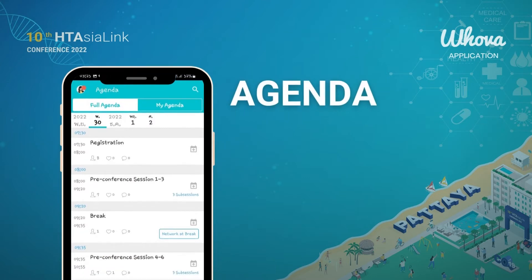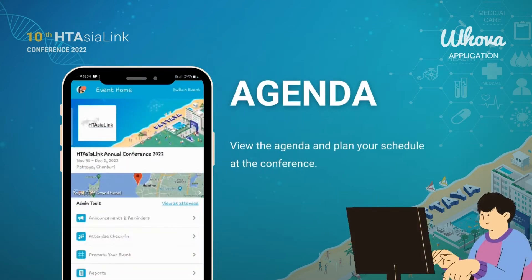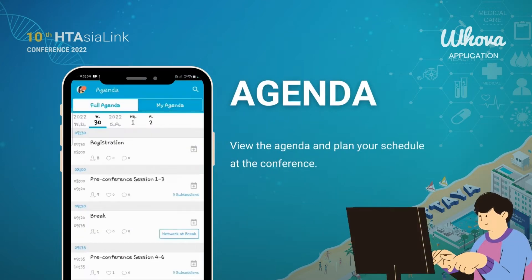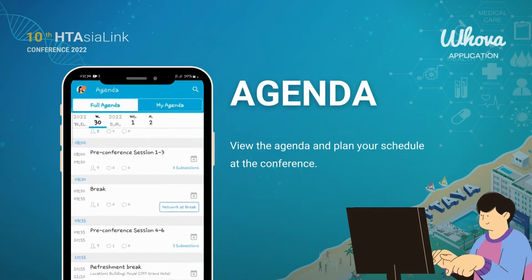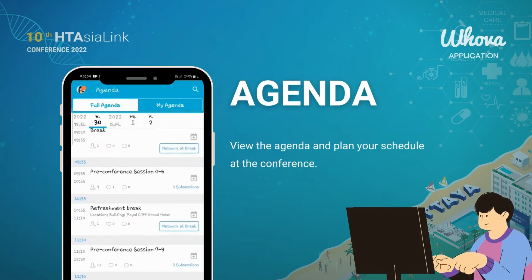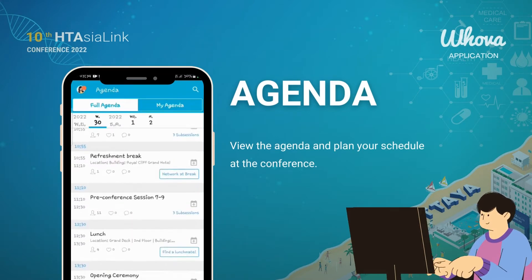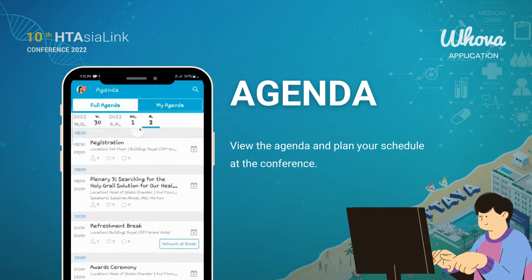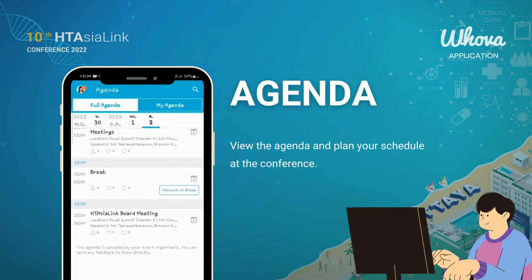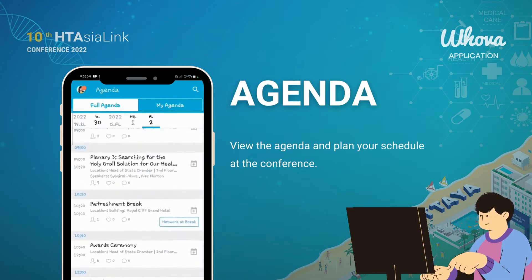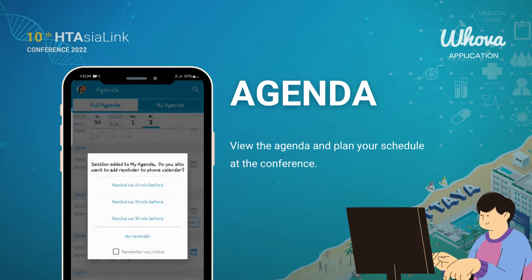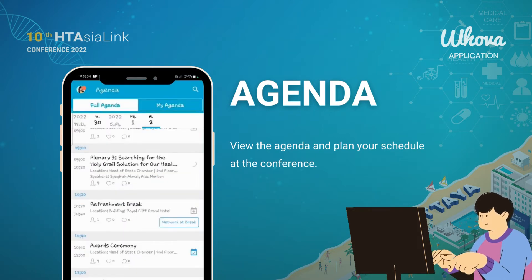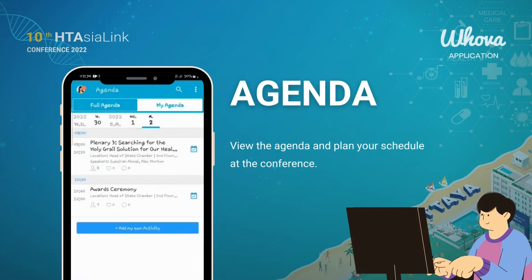With this app, you can view the agenda and the room for each session and plan your schedule at the conference. Find the Agenda tab at the bottom of the screen. You will see a list of sessions for that day. For the session you would like to join, click Add to my agenda to put the session on your own personal agenda, and set a reminder if you want. This will help ensure you are always on your schedule.